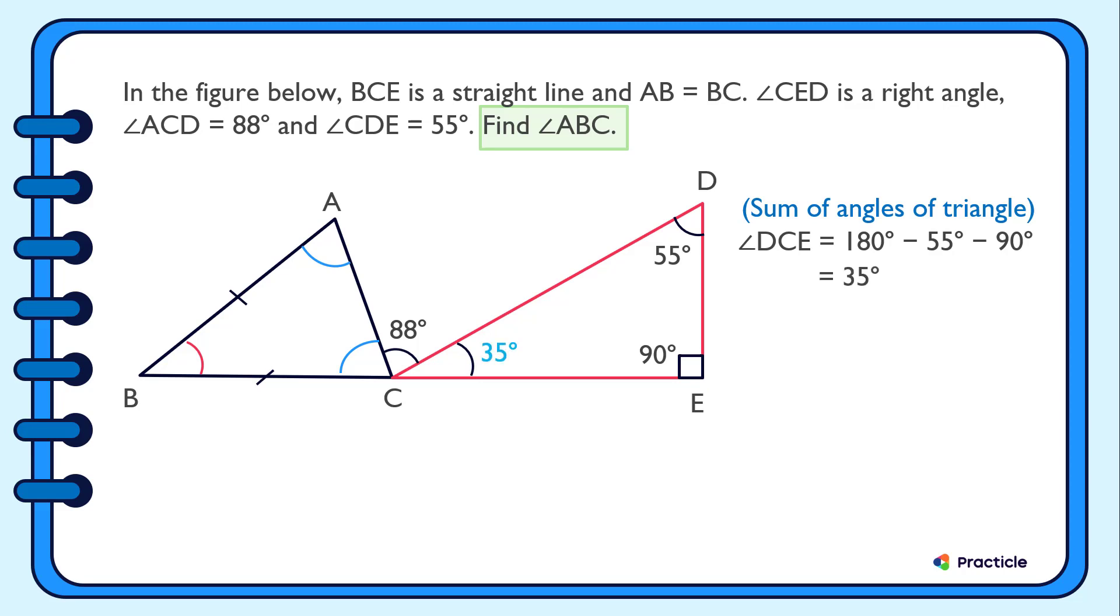And once we have this angle, we are one step closer to finding the value of angle ABC. Why? Because we can now make use of another angle rule. And that is all angles on a straight line add up to 180 degrees. So this means that angle ACB plus 88 degrees plus 35 degrees equals 180 degrees.